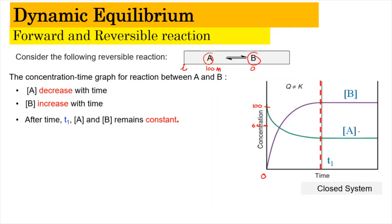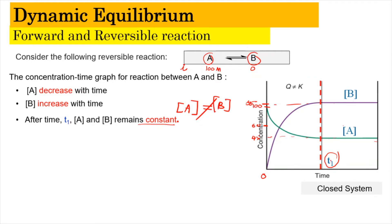After time T1, the concentration of A and the concentration of B both remain constant — perhaps around 45 and 55 respectively. However, it does not mean that the concentration of A is equal to B. Concentration of A is not equal to the concentration of B. What we know is that the concentration of A will remain constant after time T1, at which point it has already reached equilibrium.